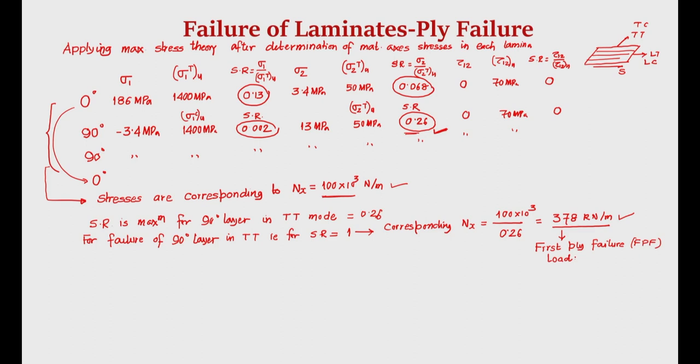After the first ply fails, we note that both 90° plies have failed out of the four plies. We are left with two 0° plies. Now that the 90° plies have failed, we must modify the stiffness matrix to determine the load at which the remaining 0° plies will fail.